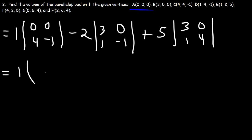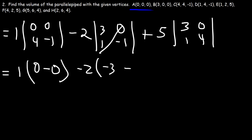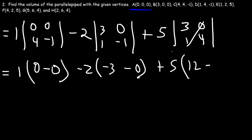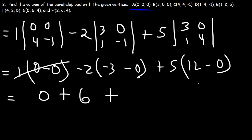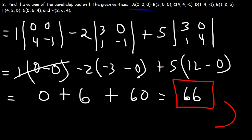Evaluating: 1 times (0×(−1) − 0×4) = 1 times 0 = 0. Then minus 2 times (3×(−1) − 0×1) = −2 times −3 = +6. Then plus 5 times (3×4 − 0×1) = 5 times 12 = 60. So 0 + 6 + 60 = 66. The volume of the parallelepiped is 66 cubic units. Now you know how to calculate the volume of a parallelepiped using the triple scalar product.